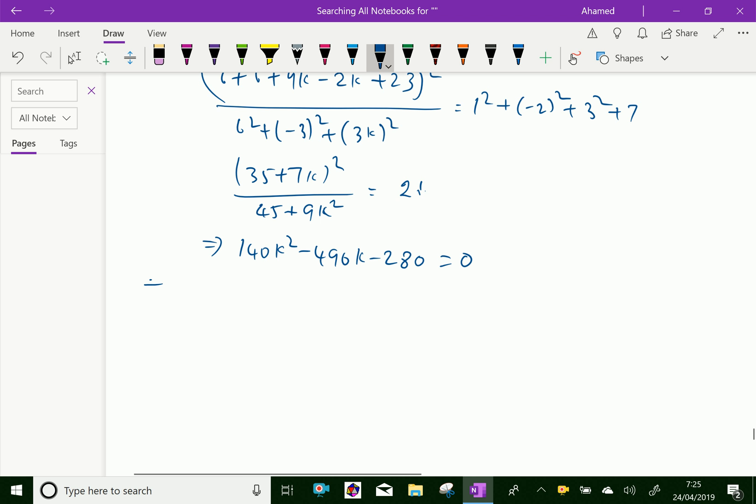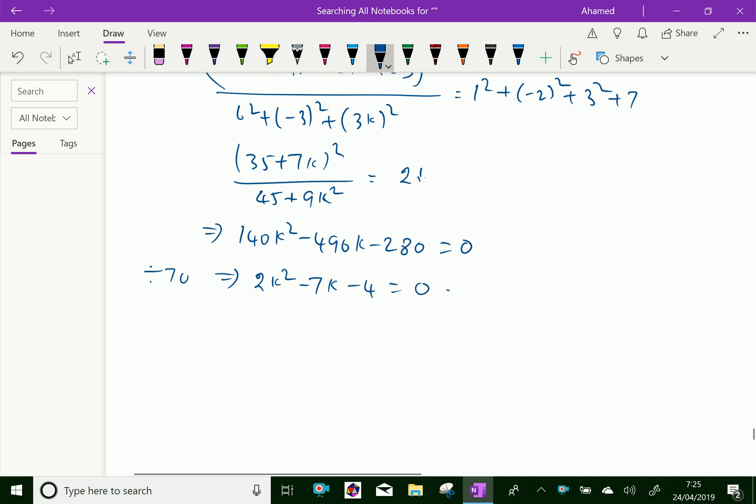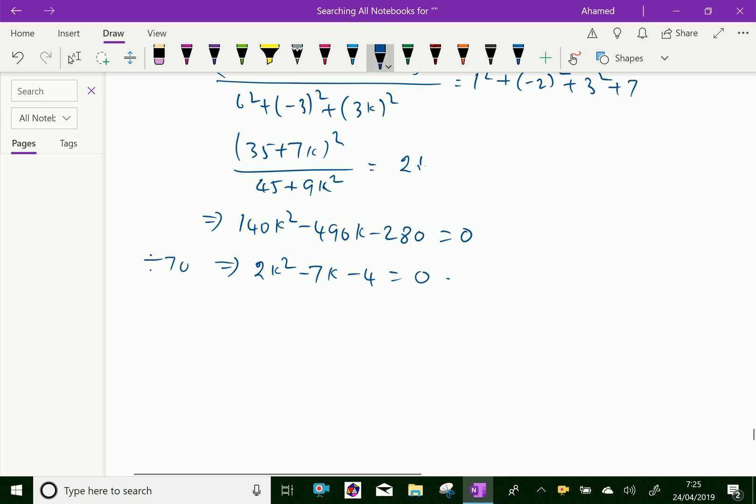Dividing by 70, we get 2k² - 7k - 4 = 0. By solving this quadratic equation, we get k = -1/2 and k = 4.